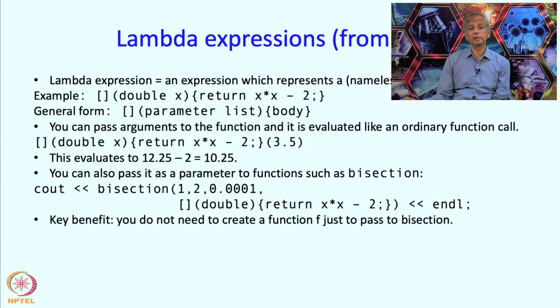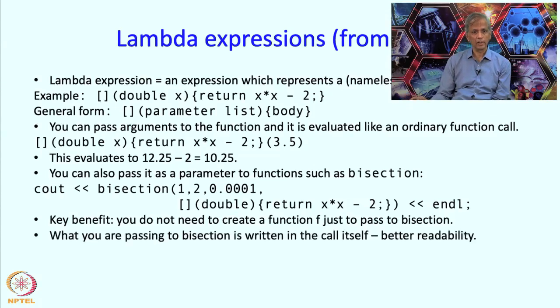And this will work. So this will indeed produce square root of, the bisection will return square root of 2. So this is as good as writing, as defining a full function outside your main program and giving it some name, say whatever f as we called it and sending f over here. But you do not really need to do that, you can just make this something local. So here as I read my code, I can see that I am just trying to find the square root of 2. I do not need to go to some other place. So basically this is going to make your program less cluttered and it will improve local readability.